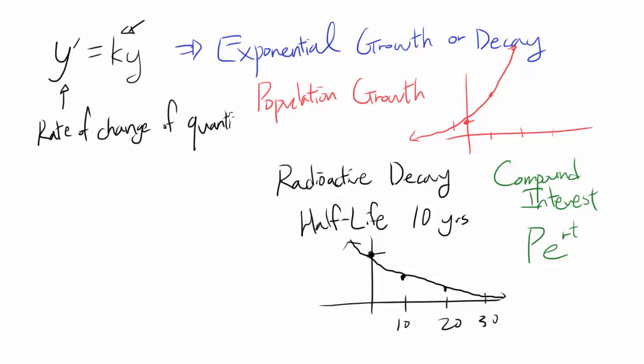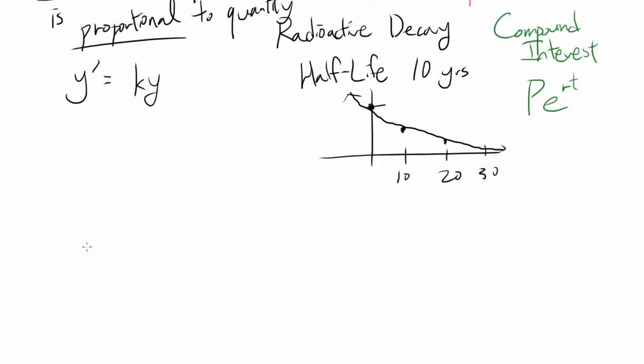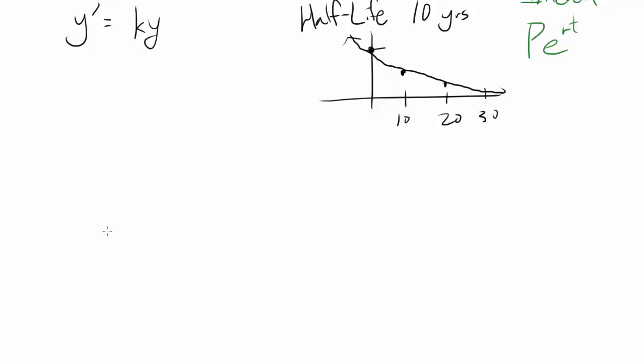When rate of change of quantity is proportional—and proportional means you're multiplying by some constant k—proportional to the quantity itself. Rate of change is derivative. Rate of change of quantity is y', proportional means you're multiplying by k to quantity, which is y. So whenever rate of change of quantity is proportional to quantity itself, you have exponential growth. Now let's solve this differential equation.